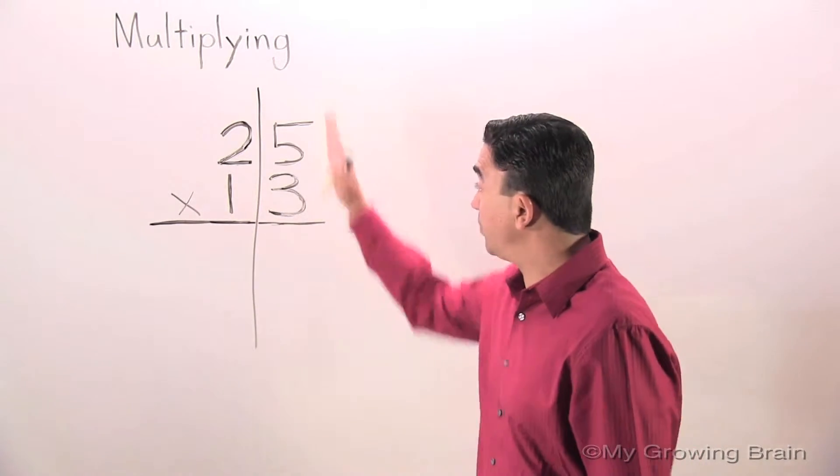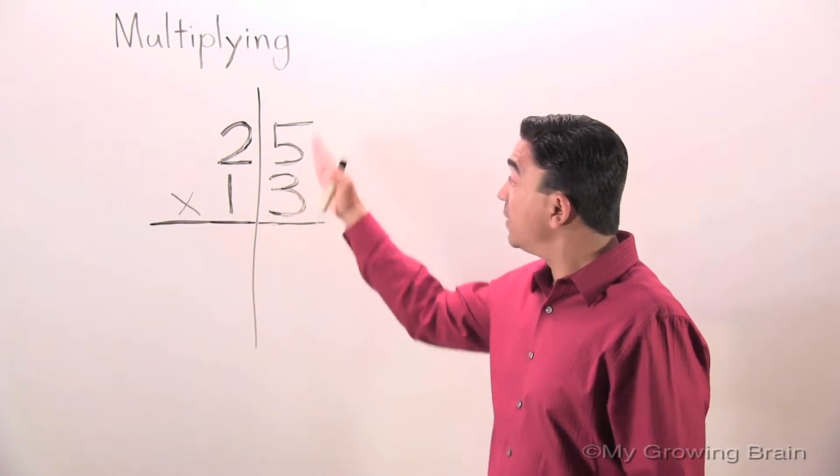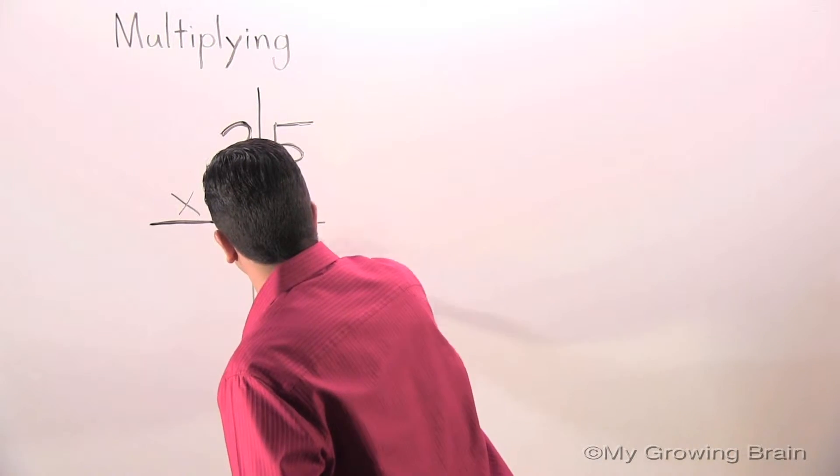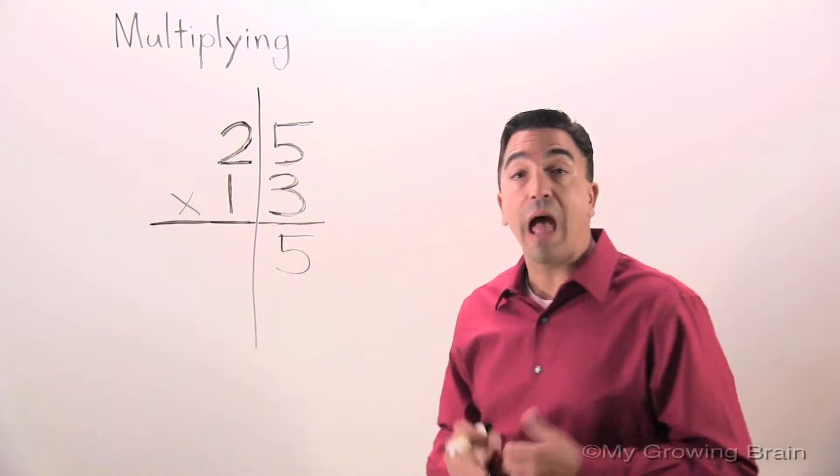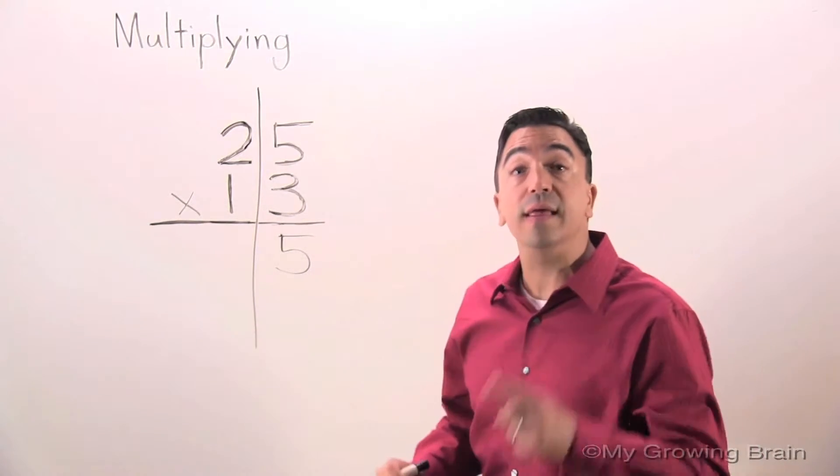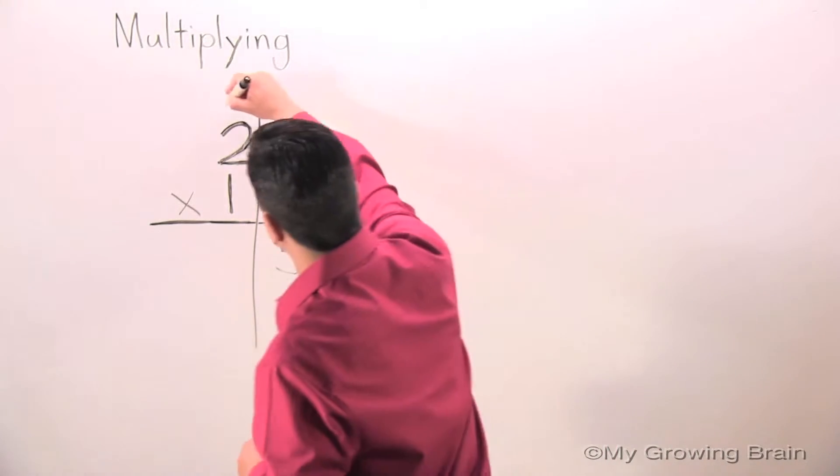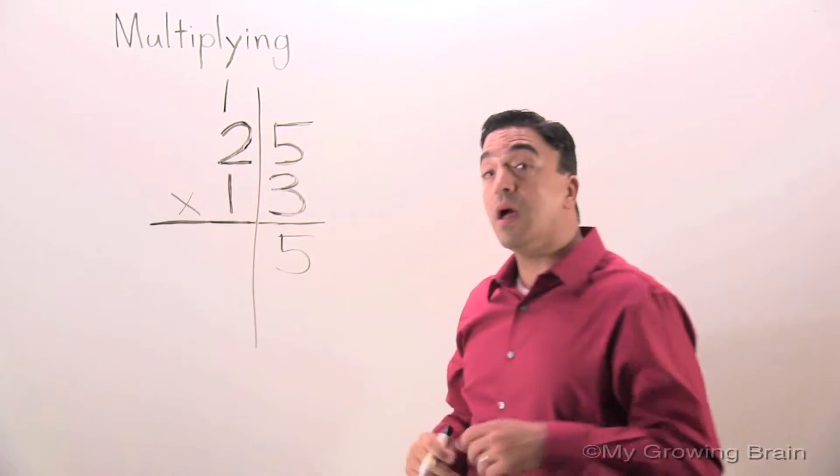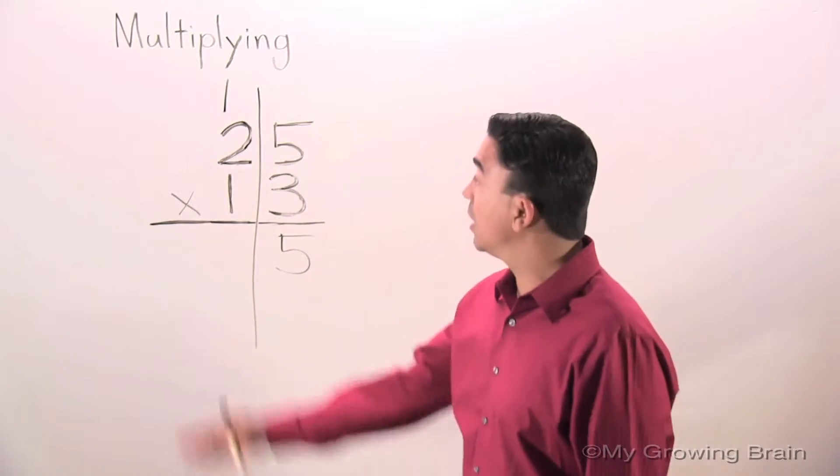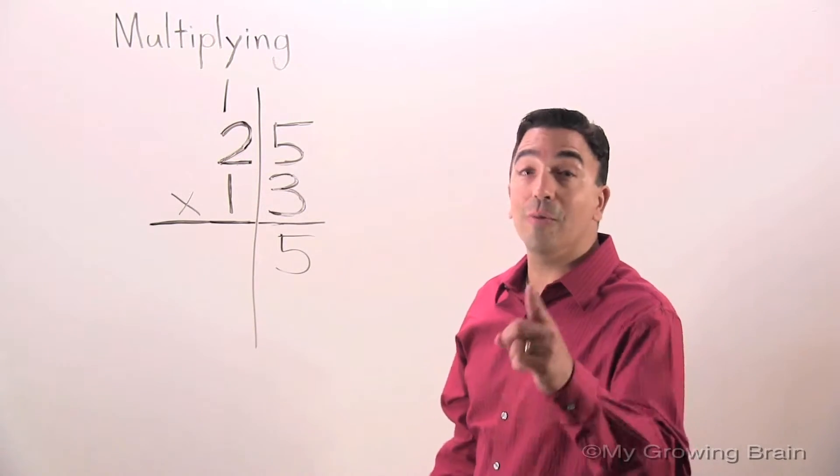We'll start in the ones place. Three times five is 15. I will carry my one, or regroup my one into the tens place. I will multiply three times two, which is six, plus one, which is seven.